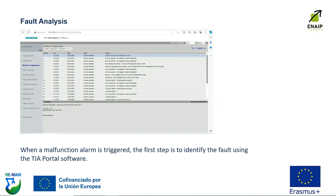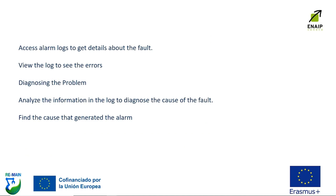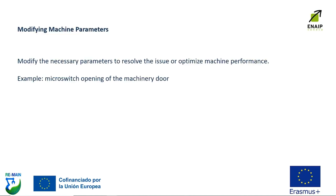Let's start from the fault analysis. When a malfunction alarm is triggered, the first step is to identify the fault. Using the TIA Portal software, you can access alarm logs to get details about the fault. You can view the log to see the errors, diagnose the problem, and analyze the information in the log to determine the cause of the fault that generated the alarm.